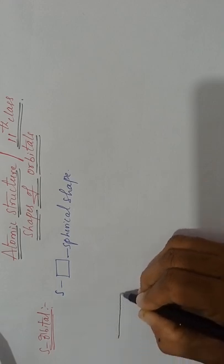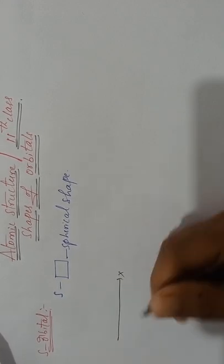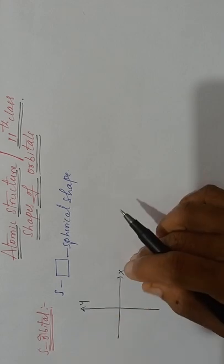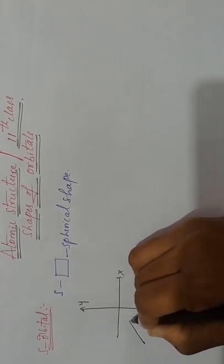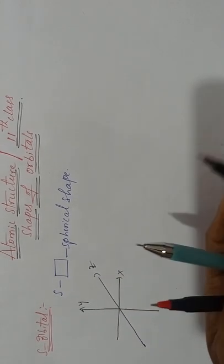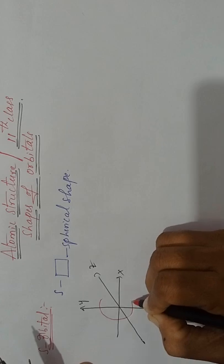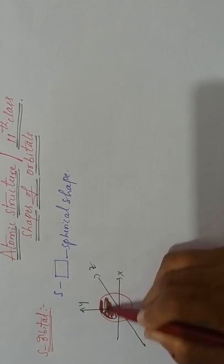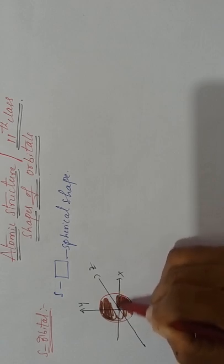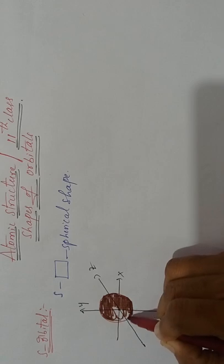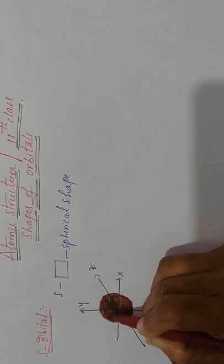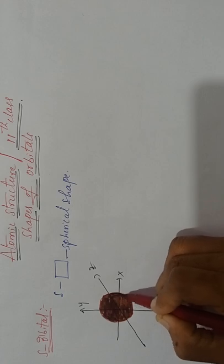This is the X axis, this is the Y axis, and this one is the Z axis. The spherical shape is this one — so this is the shape of the S orbital. Its shape is spherical. In the S sub shell, only one orbital will be there, and its shape is spherical.